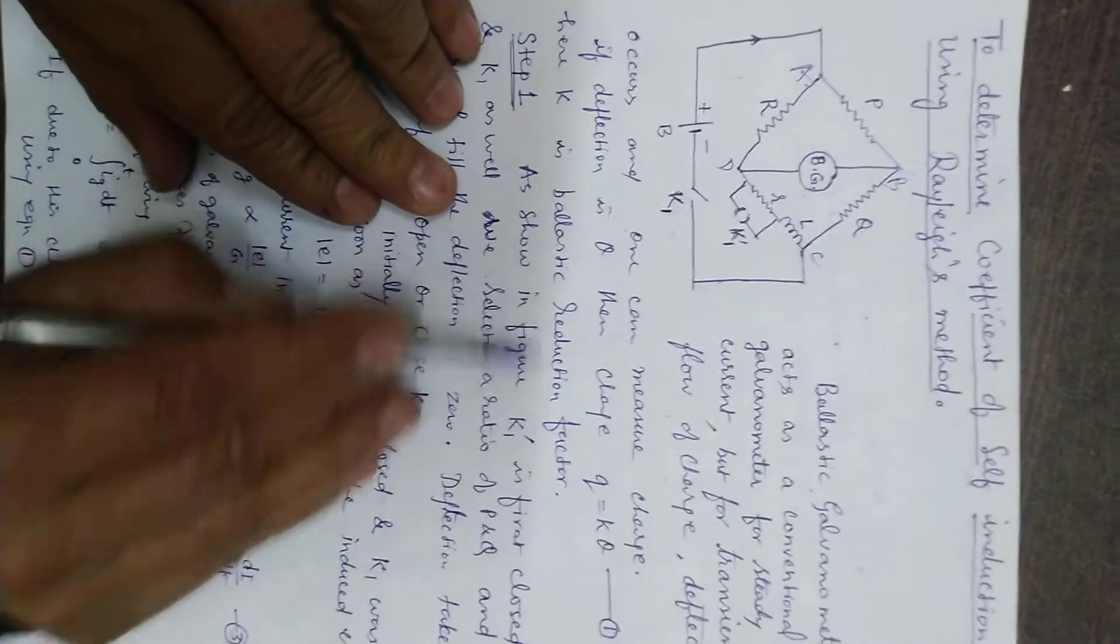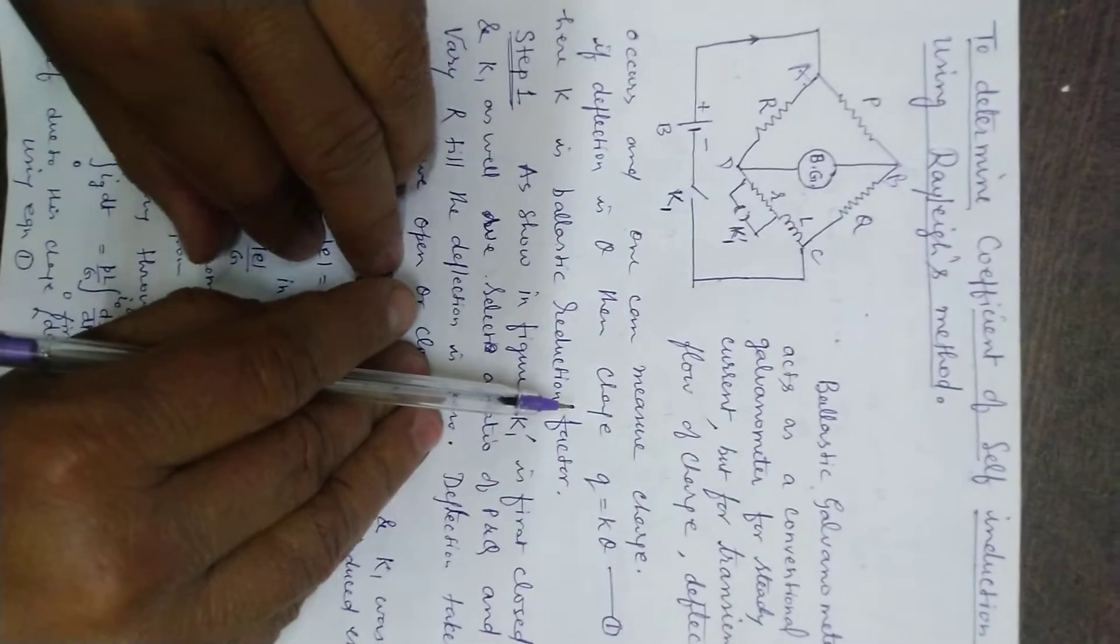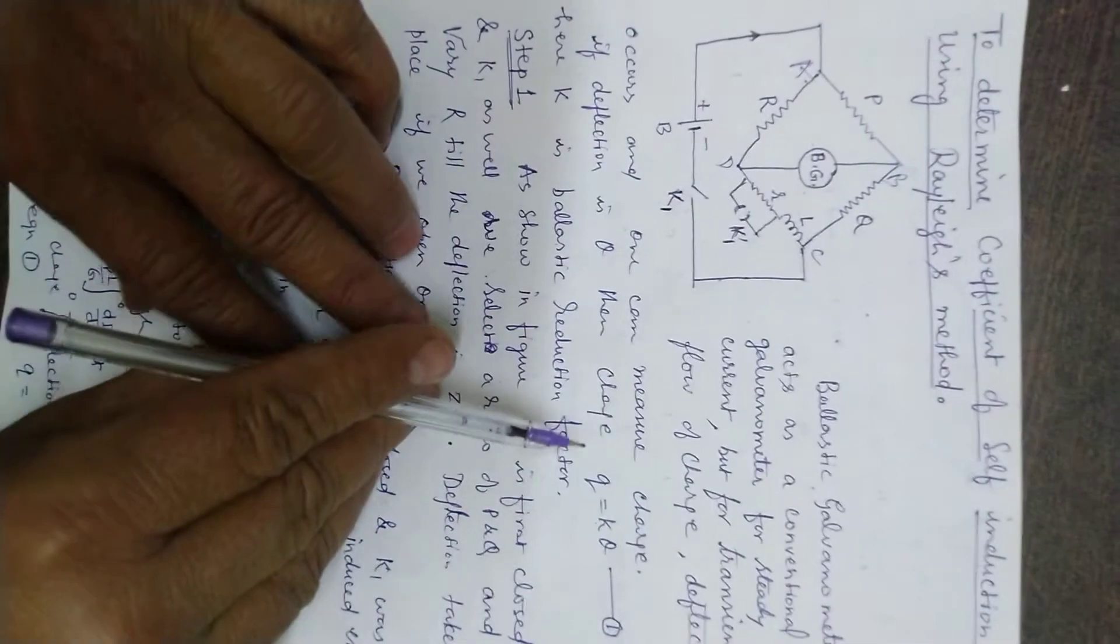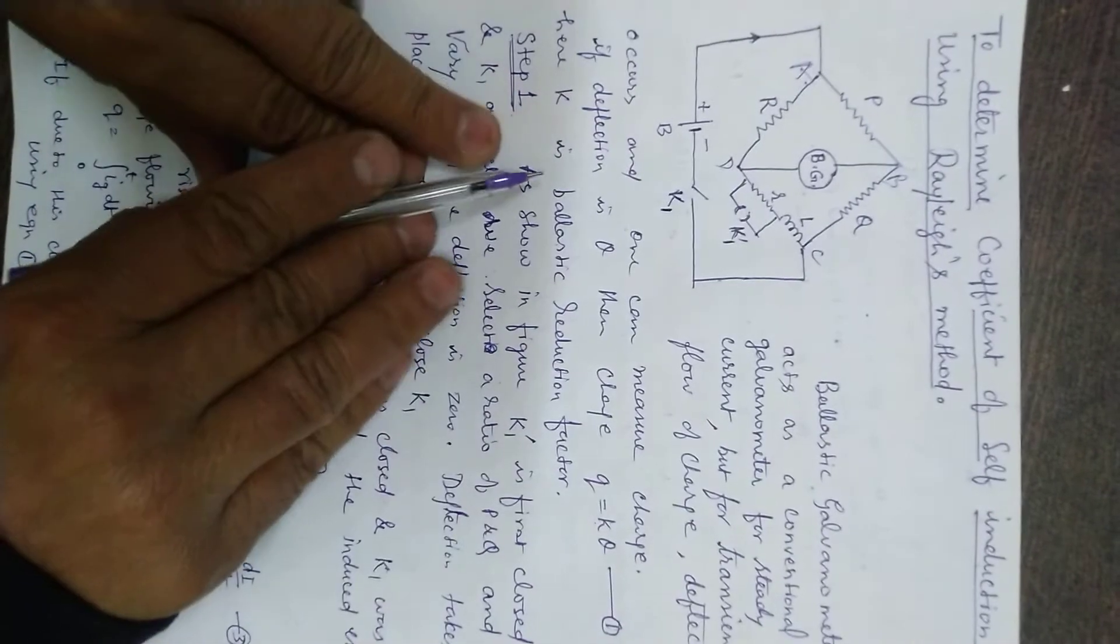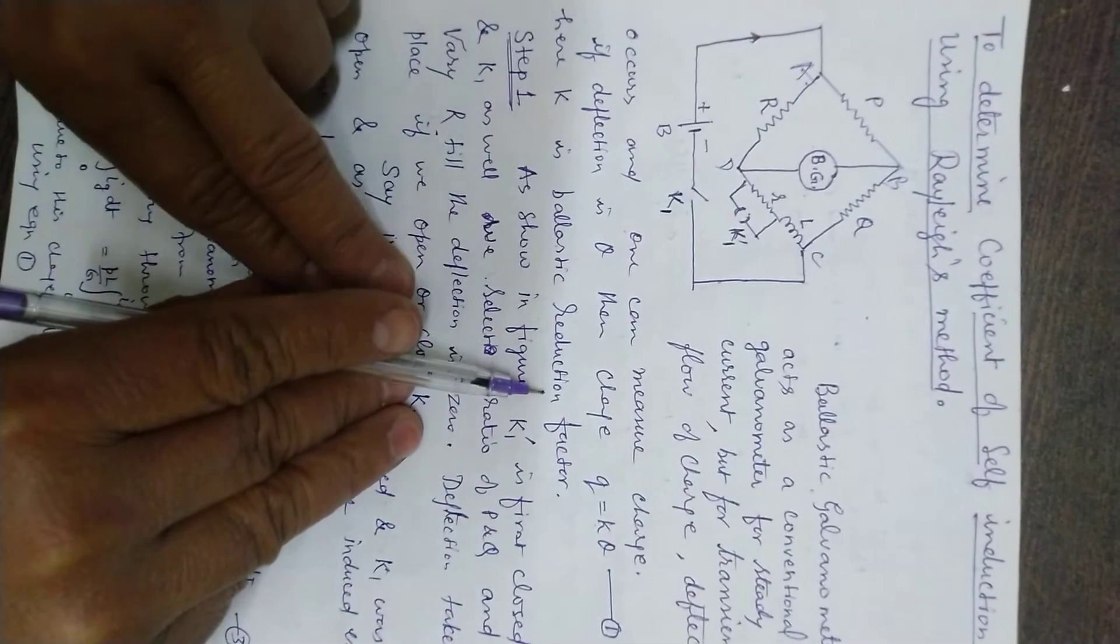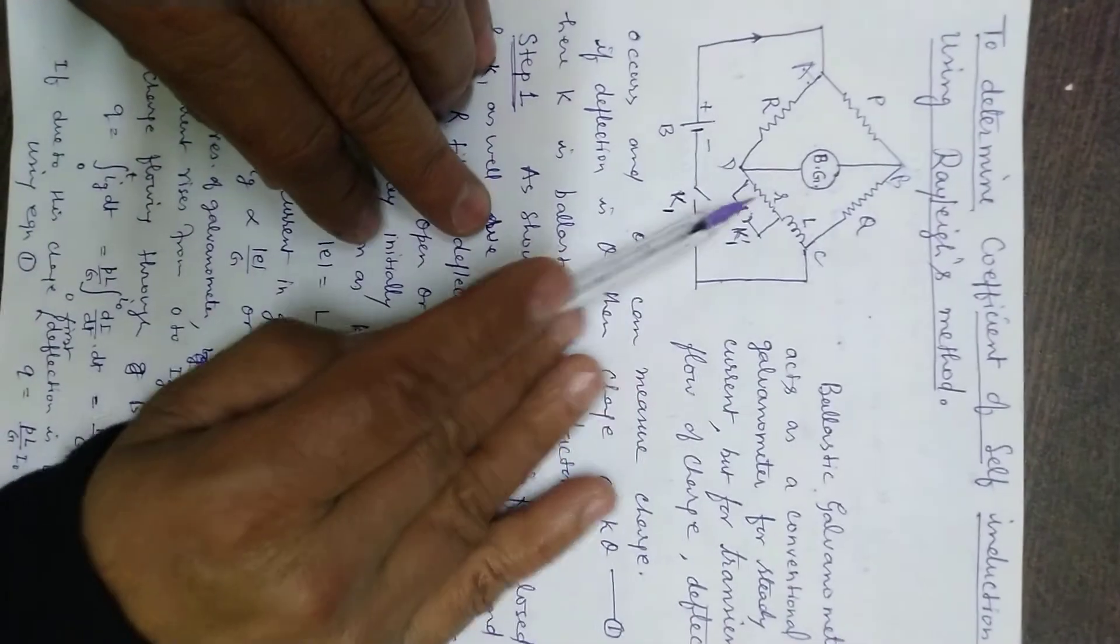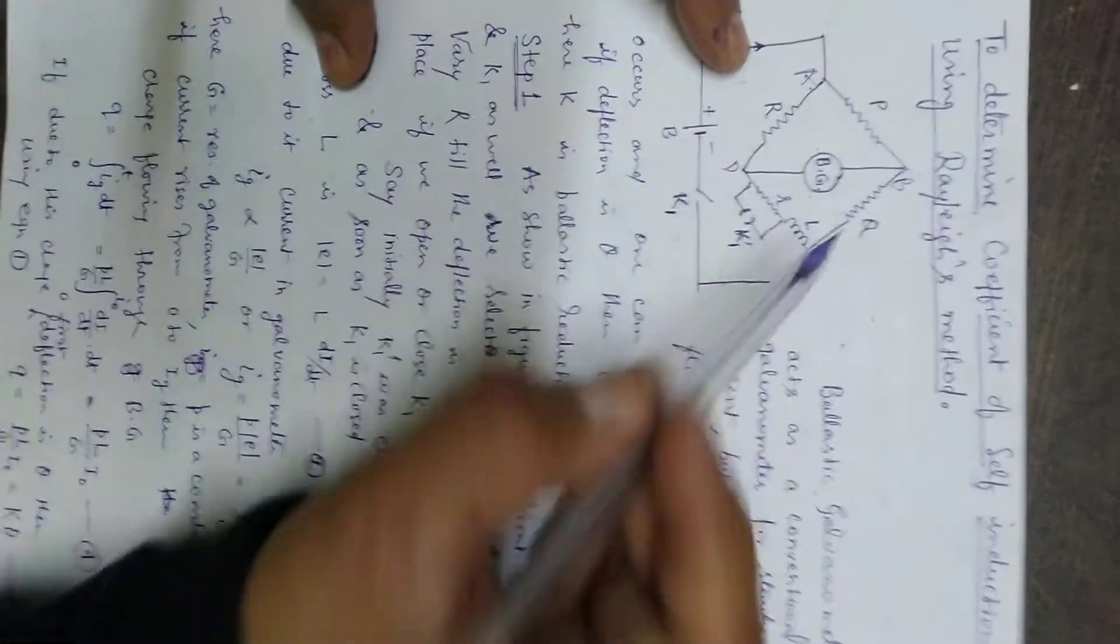The charge flowing through the galvanometer can be obtained by this equation, where k is called the ballistic reduction factor. So charge q equals k theta, and here k is ballistic reduction factor.